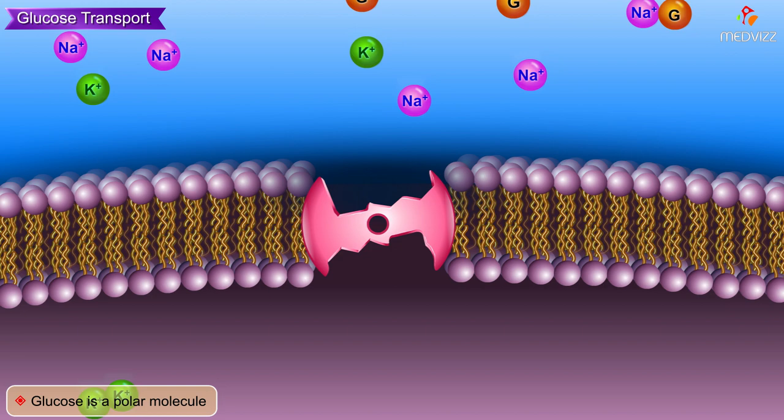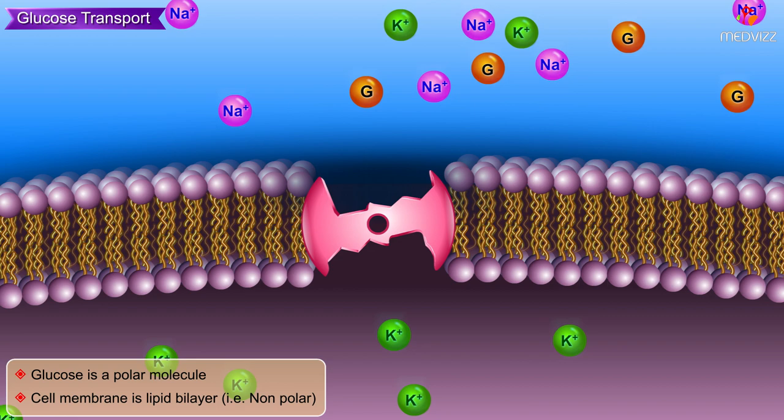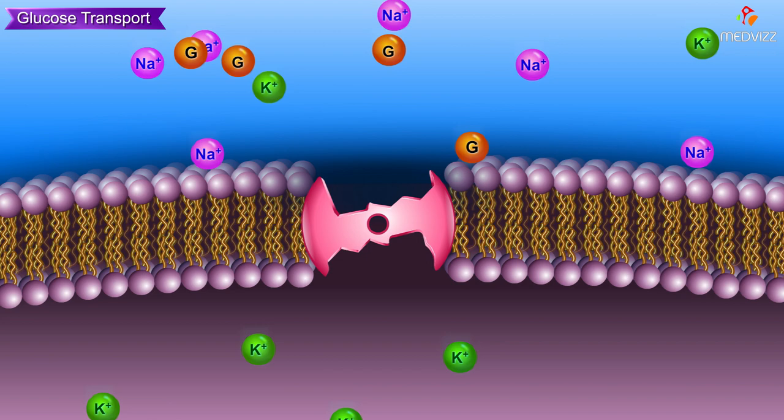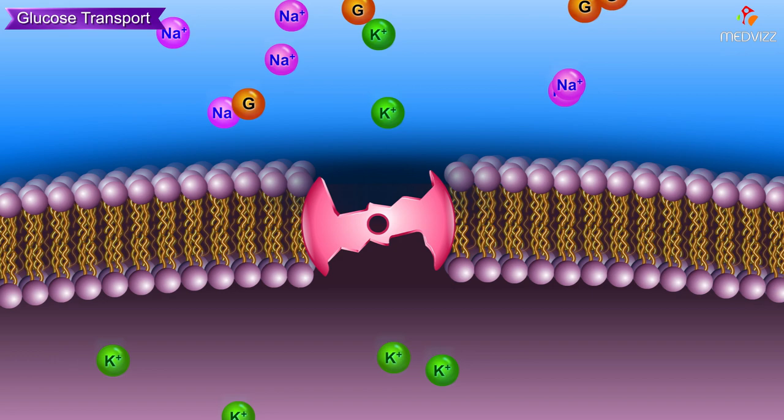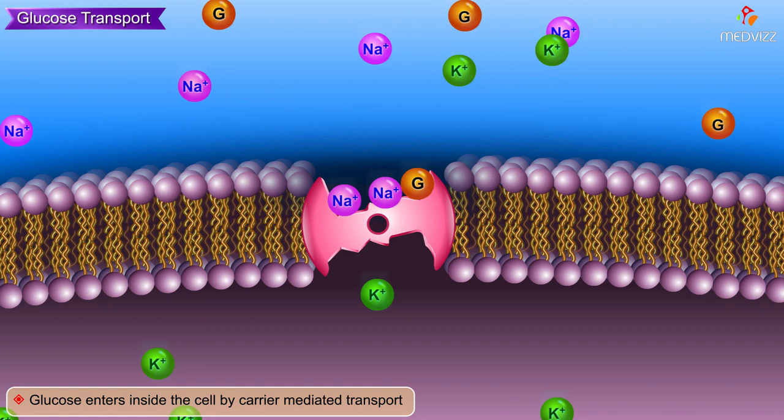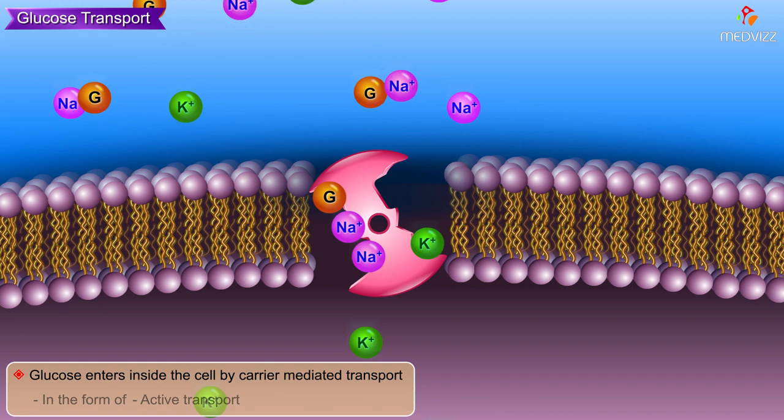Glucose is a polar molecule, but the cell membrane is a lipid bilayer which is nonpolar. Polar substances will not cross the cell membrane, so we need some kind of carrier in the cell membrane for the transport of glucose. Glucose enters inside the cell by carrier-mediated transport, in the form of active transport and facilitative diffusion.